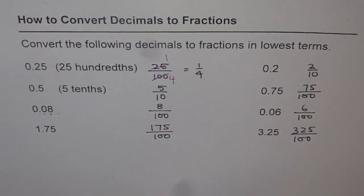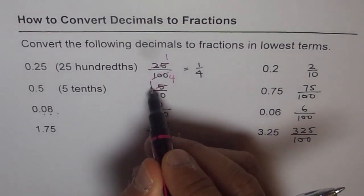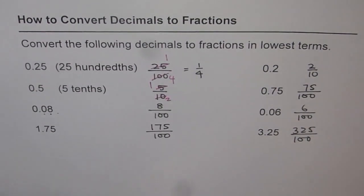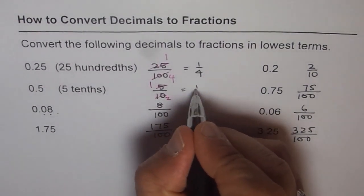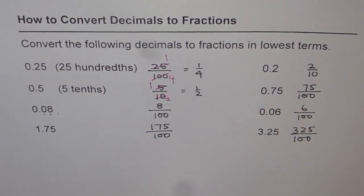Now 5 and 10. You can divide both by 5. So you get 1 here and 2. So this could be written as 1 over 2.